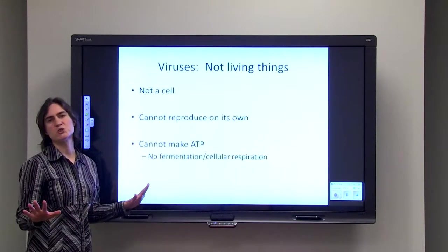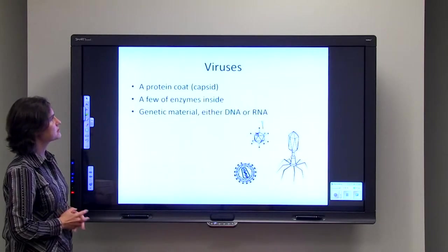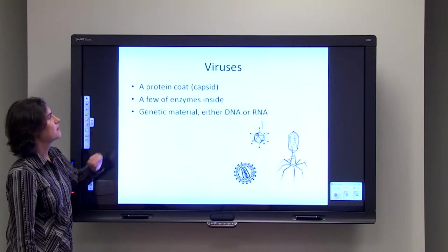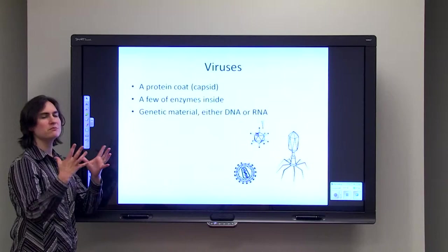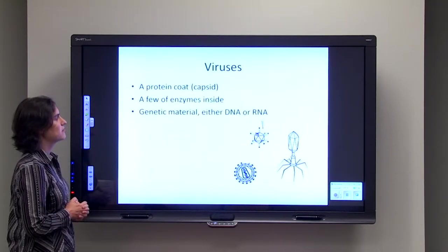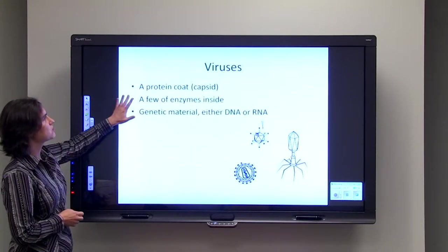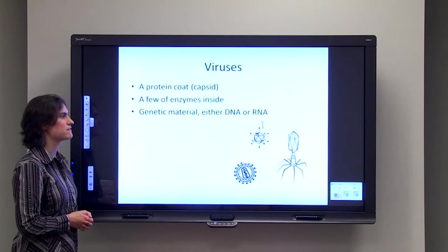So what is a virus? A virus consists of genetic material, either DNA or RNA, and then it's surrounded by a protein coat which is often called a capsid. Also inside that protein coat, sometimes you can have a couple of enzymes inside to help the virus get started when it first invades a cell.